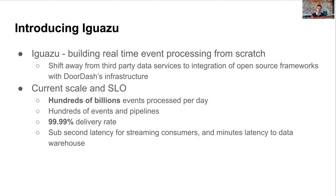Two years ago, we started creating from scratch a real-time event processing system named Iguazu. An important design decision was to shift strategy from heavily relying on third-party data services to leveraging open source frameworks that can be customized and better integrated with DoorDash infrastructure. Fast forward to today, we scaled Iguazu from processing just a few billion events to hundreds of billions of events per day with a four-nines delivery rate. Compared to legacy pipelines, end-to-end latency to Snowflake is reduced from a day to just a few minutes.